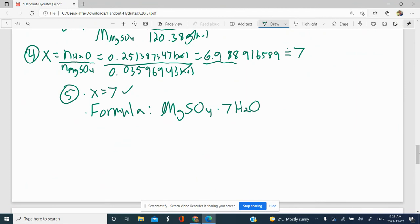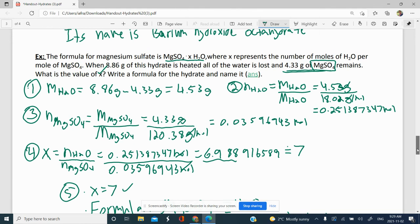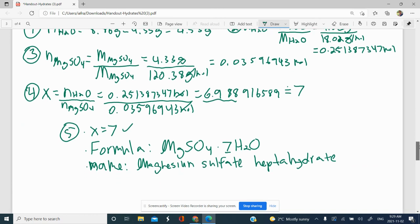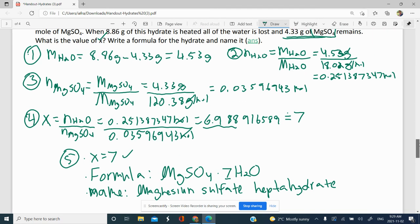And then the name based on the formula is magnesium sulfate. The 7 means hepta or leads to hepta. And then the H2O is hydrate. So magnesium sulfate heptahydrate, that's the name of our compound. Part of it was given to you here, magnesium sulfate. You have that part there. And then the hydrate part is given to you in the question as well. You just need to know what the 7 means, and that's hepta from the Greek prefix.